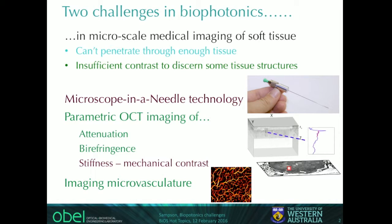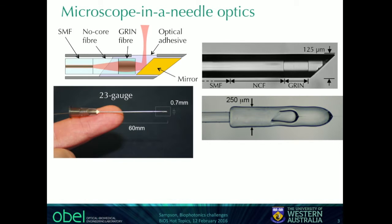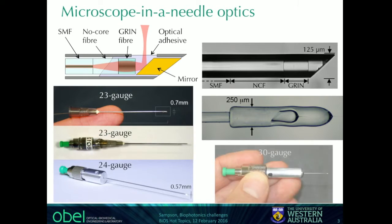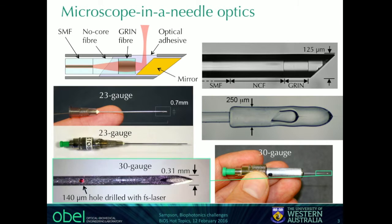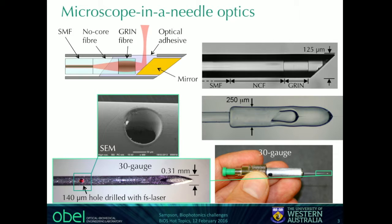Tonight I'm going to focus on two pieces of work: the microscope-in-a-needle technology, and the imaging of stiffness — the utilisation of mechanical contrast using OCT. For the last few years, we've been developing the capacity to connect small pieces of glass into making fibre microprobes. These probes have been put in hypodermic needles of a range of sizes, down to about 300 microns, and we've been directing the beam sideways and rotating or push-pulling the needle to create three-dimensional images.